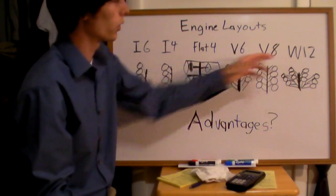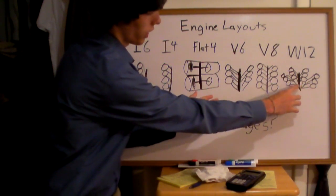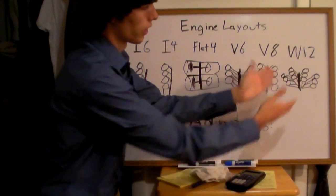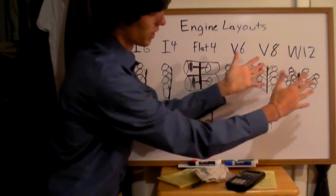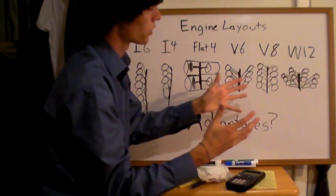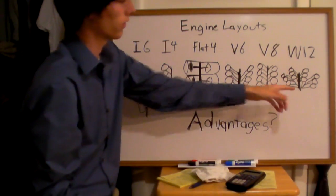Now a W12 is basically two V6's mated together to a single crankshaft as you can see in the picture. So it's going to have 12 cylinders and a W shape. It's basically just the two V6's connected together, rotating a single crankshaft.